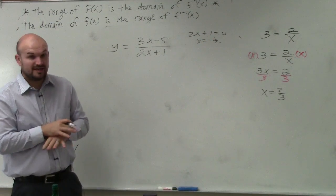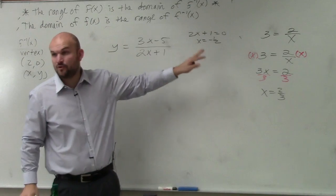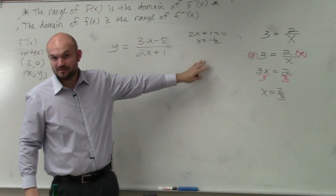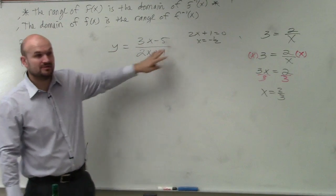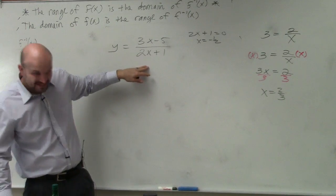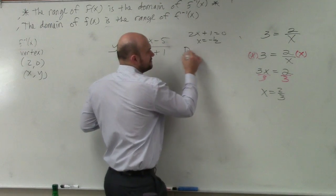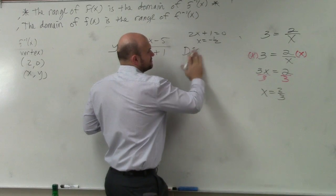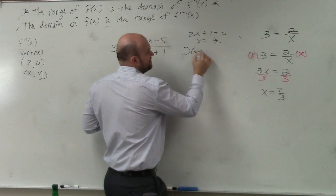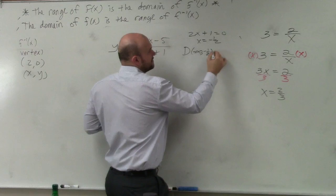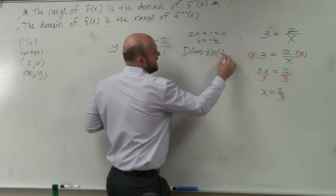So my domain is all real numbers except for the number negative 1 half. Because when x equals negative 1 half, my denominator is 0. So my domain I'd write as negative infinity to negative 1 half, union negative 1 half to infinity.